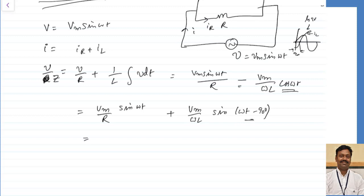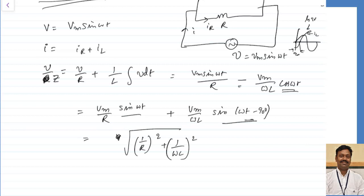I want to write this in the form V maximum sin of omega t plus phi or omega t minus phi. Writing the answer directly, the total current will be of the form: the square root of 1 by R square plus 1 by omega L whole square, multiplied by V maximum sin of omega t minus phi. We will solve more carefully for the RLC parallel circuit case so that it will be clear.